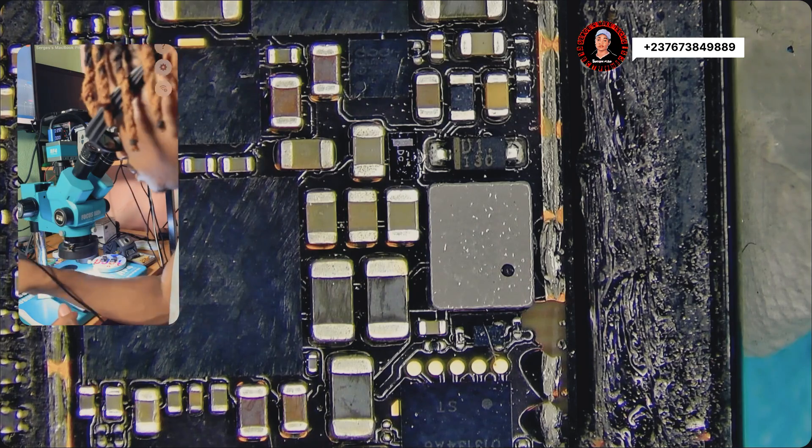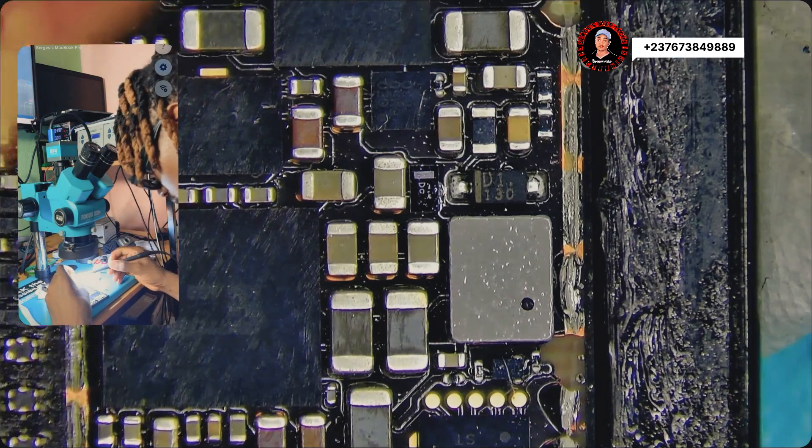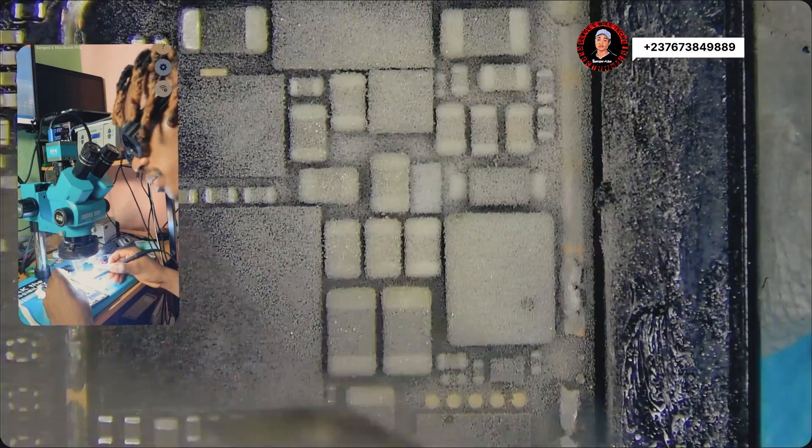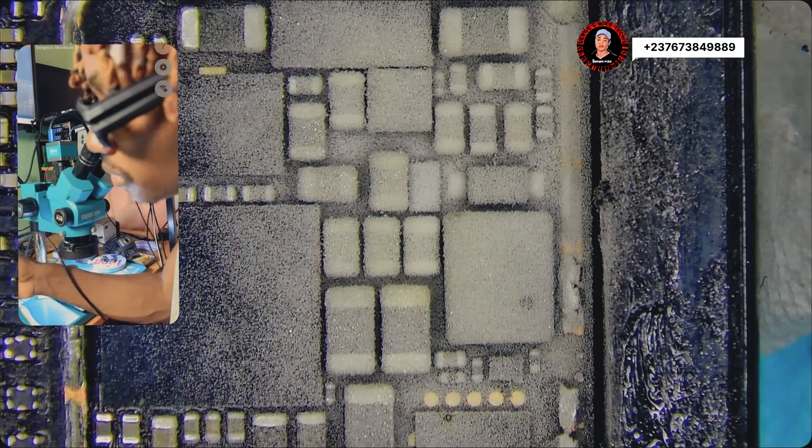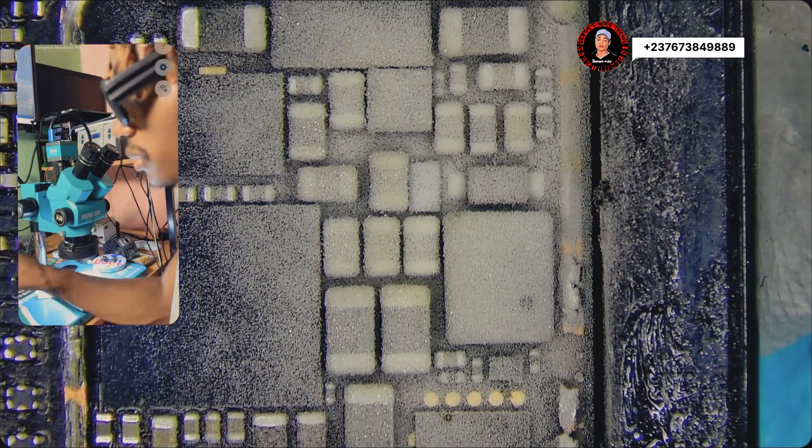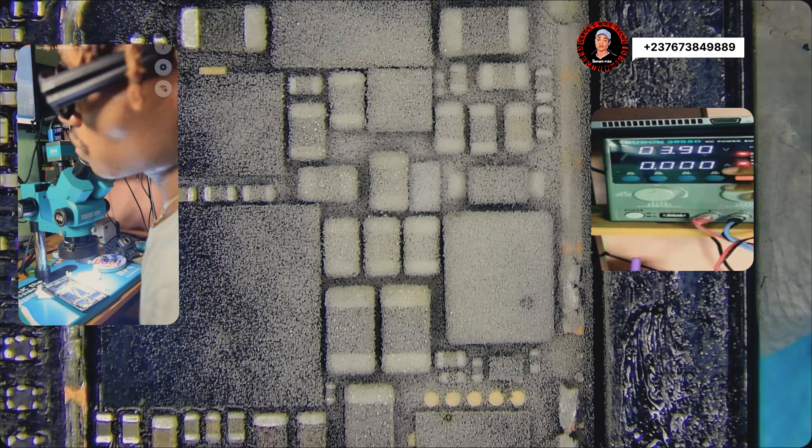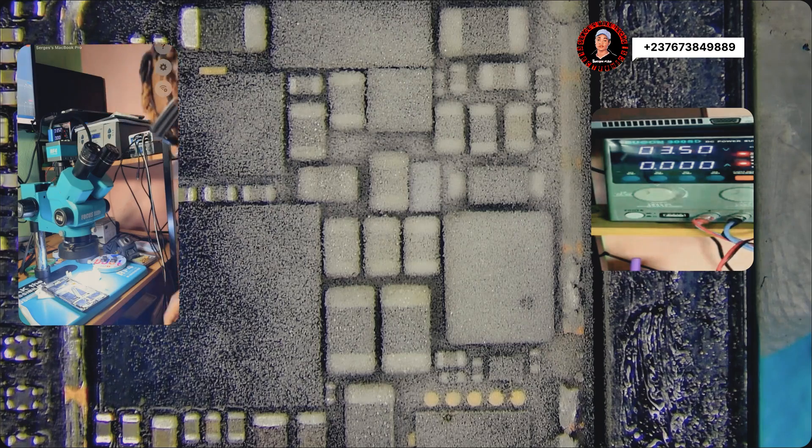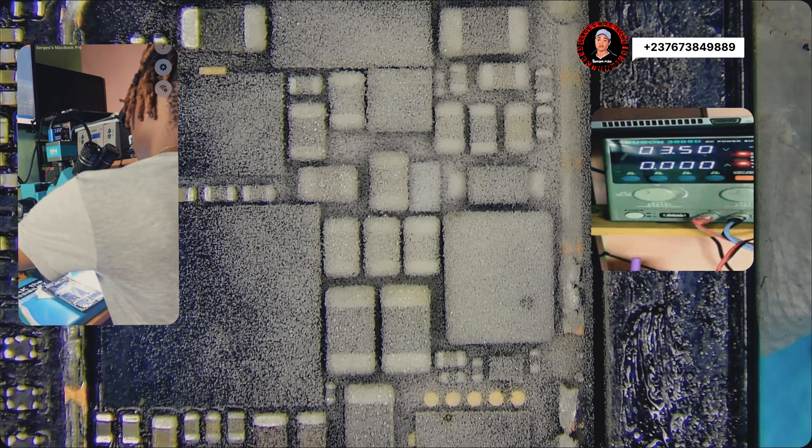Now we are going to use rosin flux. This is what I use in most cases when I have a short in a mobile PCB. That's my power supply screen. I set the current to five, then the voltage to 3.5.